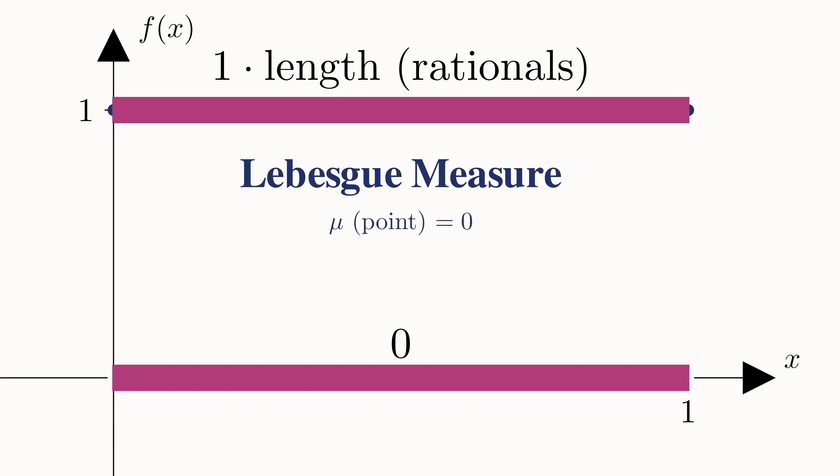Since the rationals are just an infinite set of discrete points, then the length of the rationals is just the sum of the lengths of each of these points. So the rationals have a length of zero, which means that the Lebesgue integral of this function is zero.